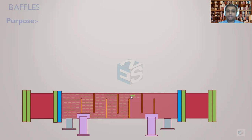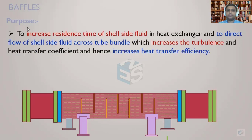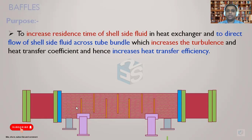These are single segmented baffles, and the flow direction changes at each baffle cut. The purpose of the baffle is to increase the residence time of the shell side fluid in the heat exchanger, and to direct the flow of the shell side fluid across the tube bundle. This increases turbulence and the heat transfer coefficient, and hence increases heat transfer efficiency. More contact time with the tube bundle means more heat transfer, and directing the flow across the bundle creates turbulence that further improves the heat transfer coefficient.